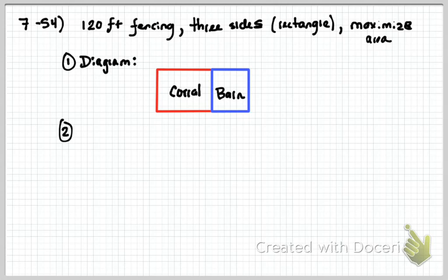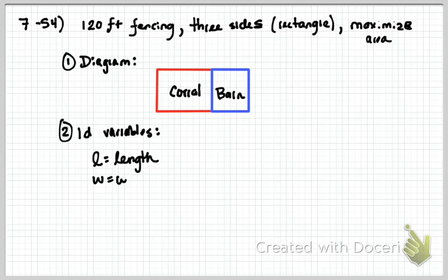Alright, so the first step is to draw a diagram. Second step is to define variables. So ID your variables. So if it's a rectangle, we know that we have a length, L for length, and W is our width. We'll also know that we're going to be able to figure out our perimeter here. Our P is going to be our perimeter, or the fence used. And then A is going to equal our area.